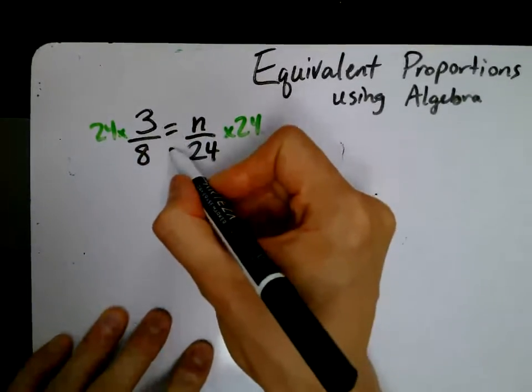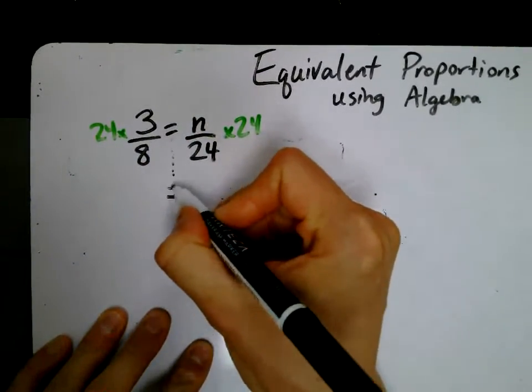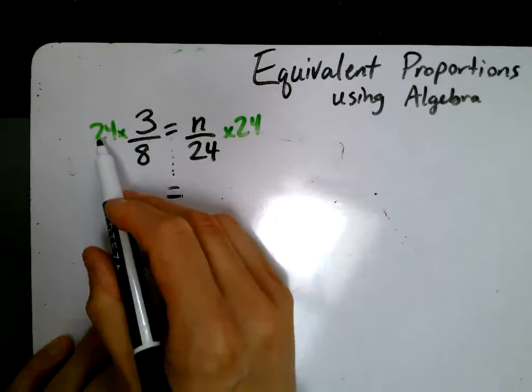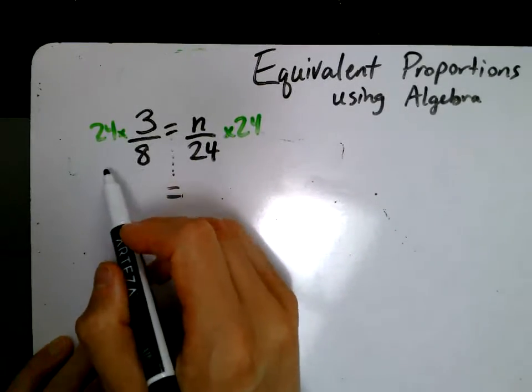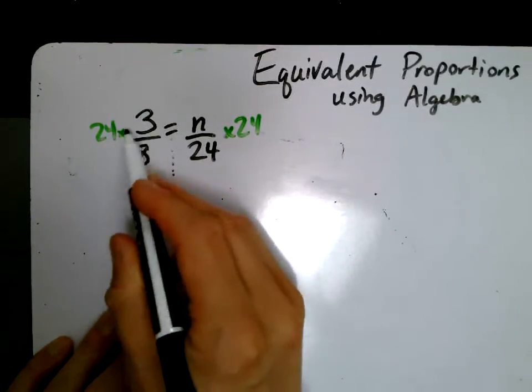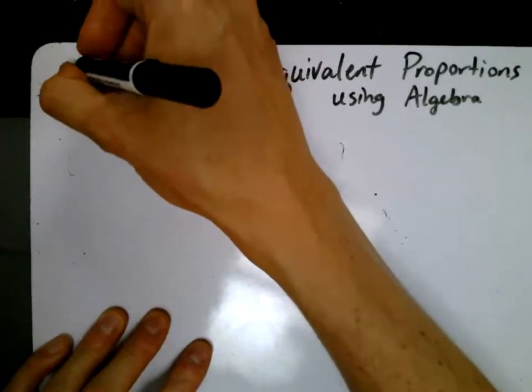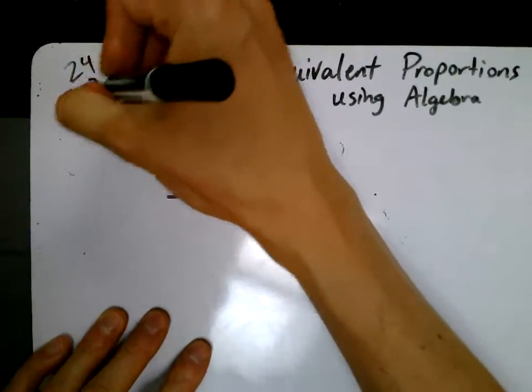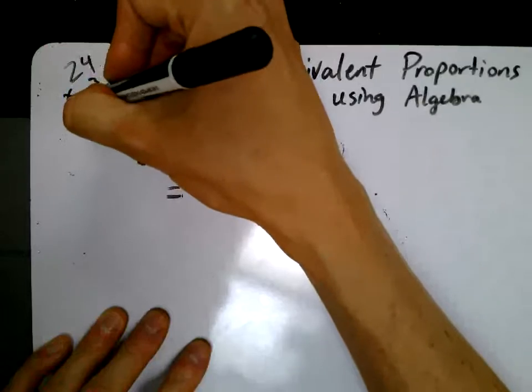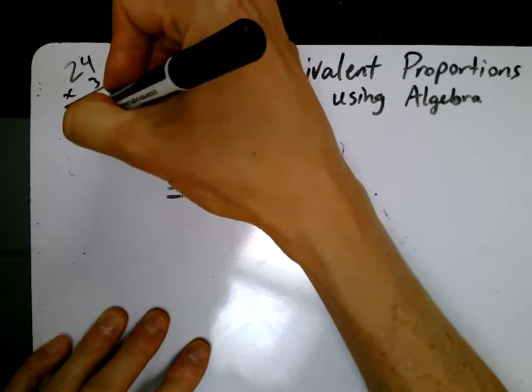Okay, so I'm going to leave my equal sign on the same vertical. Now I've got 24 times 3 divided by 8. Now if you want to calculate this whole thing, go ahead. 24 times 3. 3 times 4 is 12. 3 times 20 is 60.